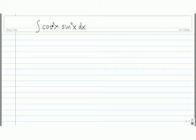The way we're going to solve this is we're going to go to the odd power here of cosine and rewrite it as the integral of cosine of x times cosine squared of x. And then we keep the sine to the fourth of x dx.